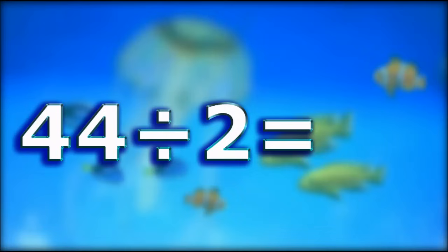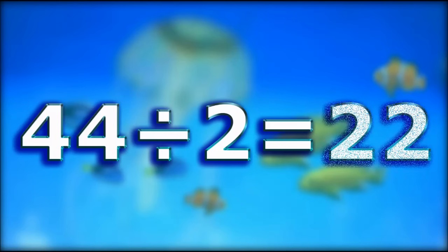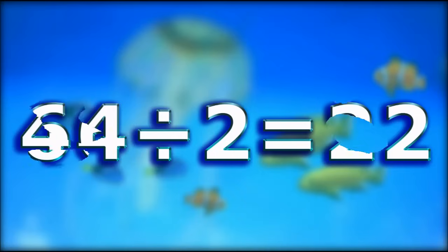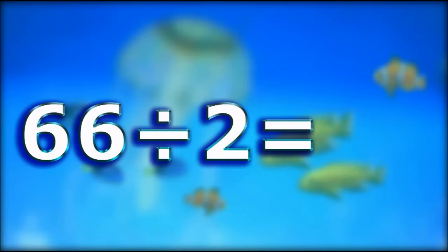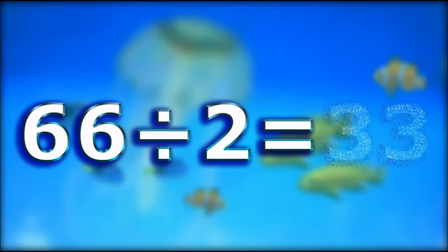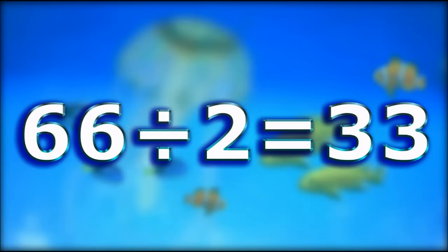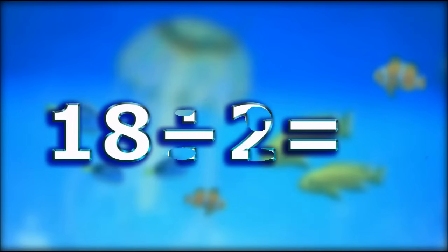Forty-four divided by two equals twenty-two. Sixty-six divided by two equals thirty-three. Eighteen divided by two equals nine.